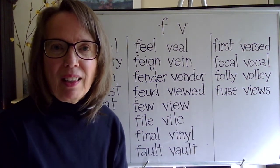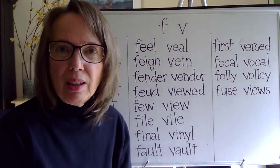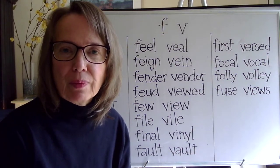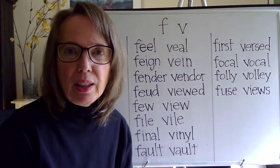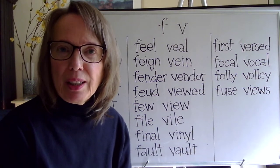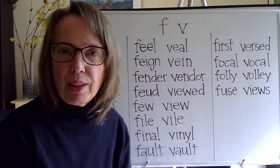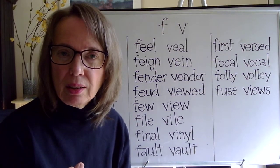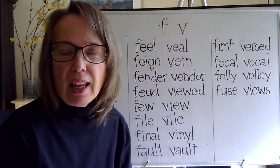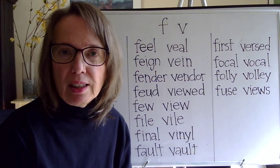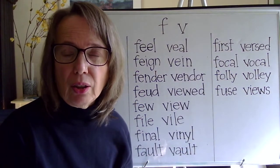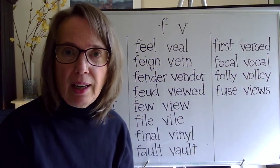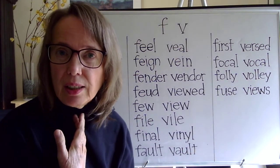Hi. This video is about F and V at the beginning of words. F and V can be in a minimal pair because they are pronounced using the same mouth position. The difference is that F is voiceless and uses only air, and V is using air plus adding voice.